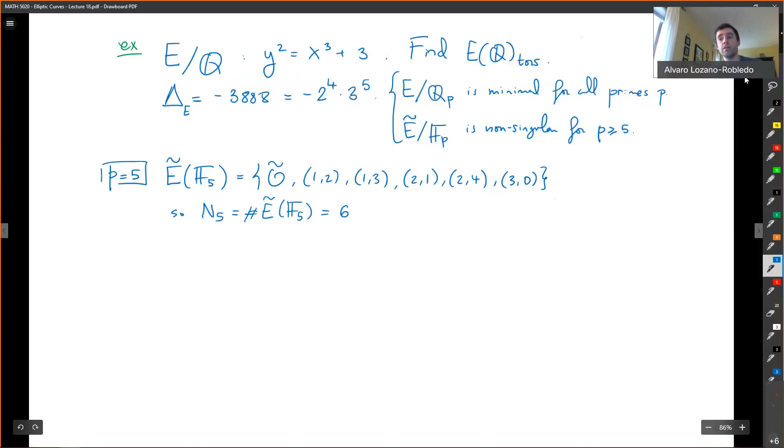There are exactly 6 points. I'm going to do another calculation, which is for P equals 7. I'm going to do the same thing, and it turns out that the number of points over F7 is 13.